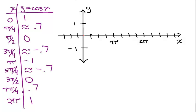So let's go ahead and graph this. We have 0, 1 — so we plot 0, 1. We have pi over 4 at about 0.7, approximately right here. Pi over 2 is 0, so we're down here at 0. 3 pi over 4 is negative 0.7, that's about right here. At pi, we're at negative 1. At 5 pi over 4, we're at negative 0.7, about right here. 3 pi over 2 is 0. And 7 pi over 4 is 0.7 again, and we're up here.